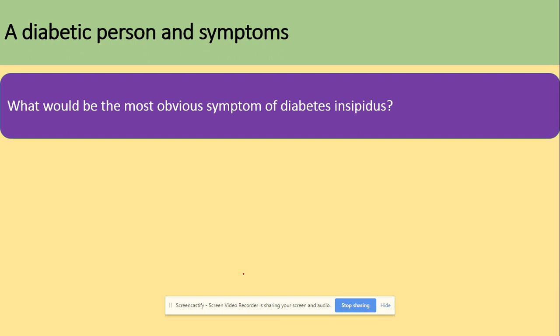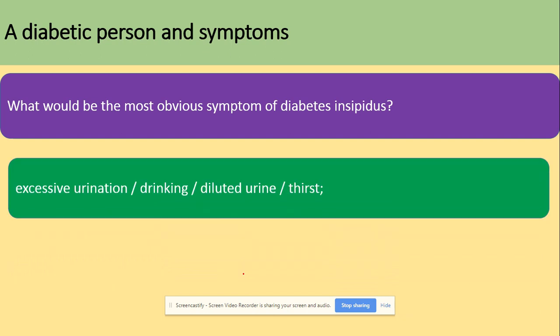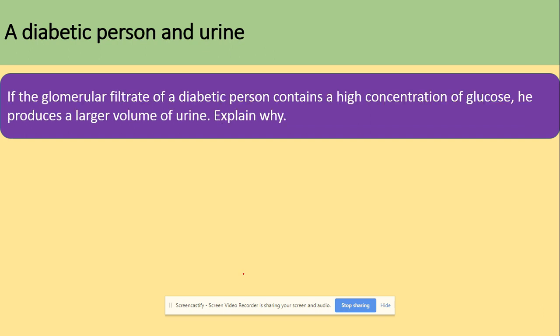One more question: what would be the most obvious symptom of diabetes? If blood glucose concentration increases, the person will drink a lot, experience excessive urination, produce diluted urine, and feel thirsty all the time. The topic of diabetes is easily linked to the kidney and nephron.